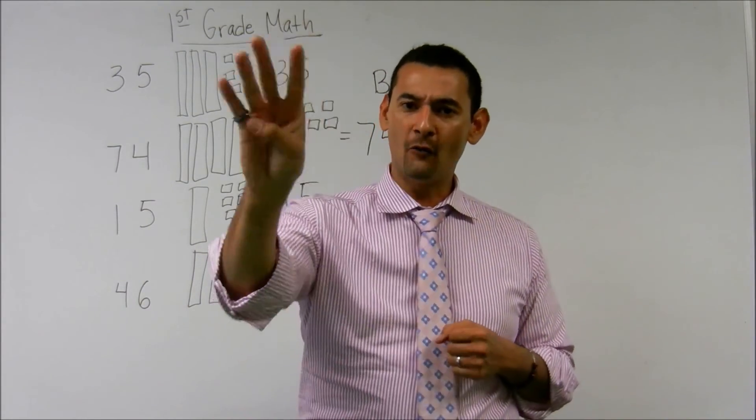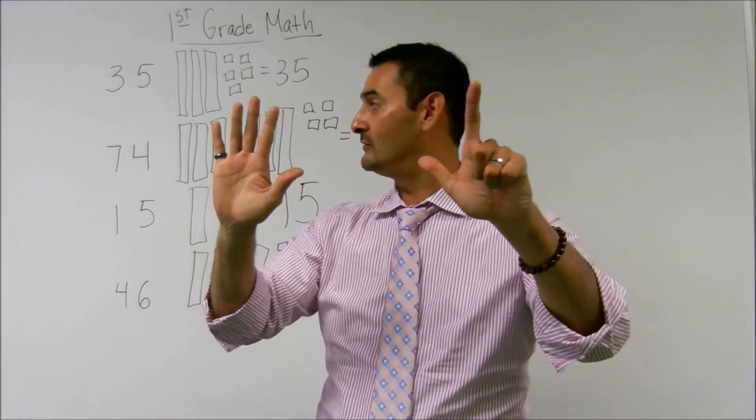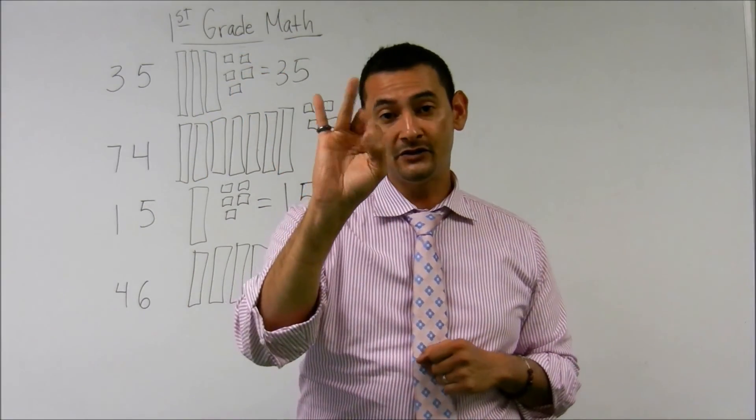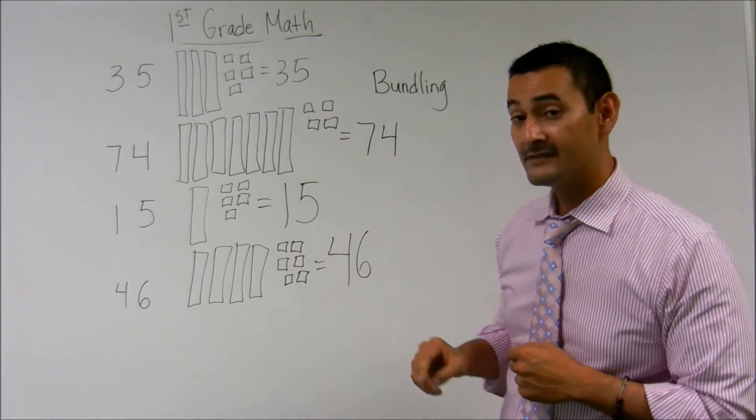Ten, twenty, thirty, forty, fifty, sixty, seventy. We've got seven tens. And then, one, two, three, four, four ones.